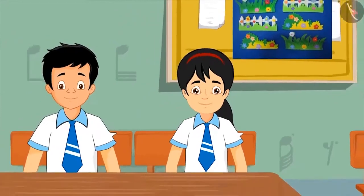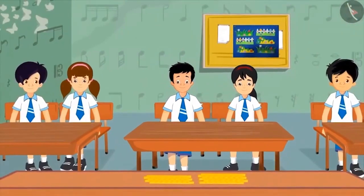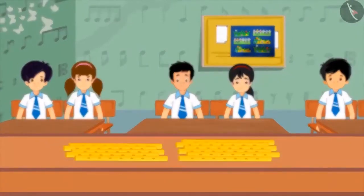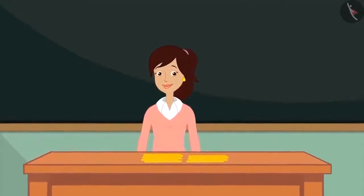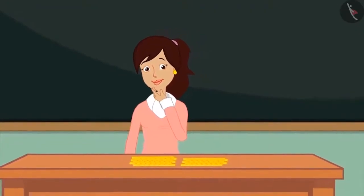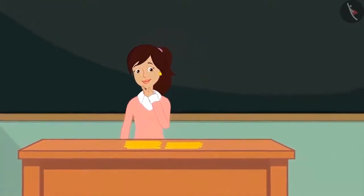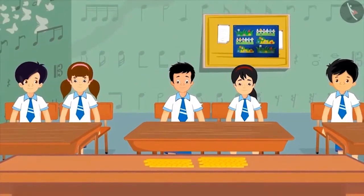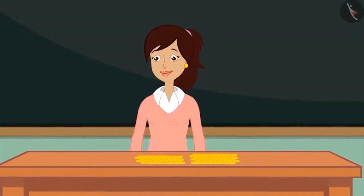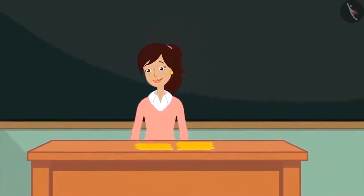Today Pinkie and her friends have their first music class. In the class, many flutes are placed on the table. The teacher has to give a flute to each child. But for this, she should know how many children are there in the class — the total number of children. To find out, she makes the children stand in a row and starts counting them one by one.